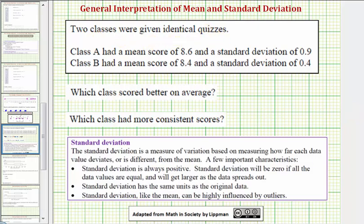Two classes were given identical quizzes. Class A had a mean score of 8.6 and a standard deviation of 0.9. Class B had a mean score of 8.4 and a standard deviation of 0.4.